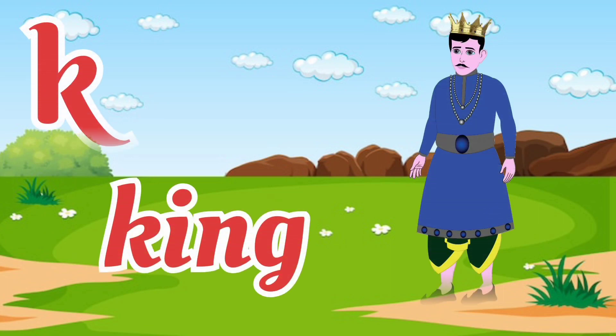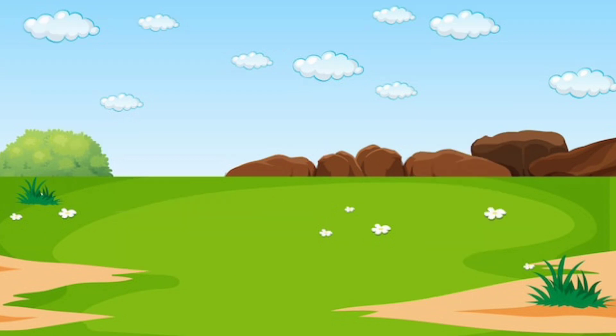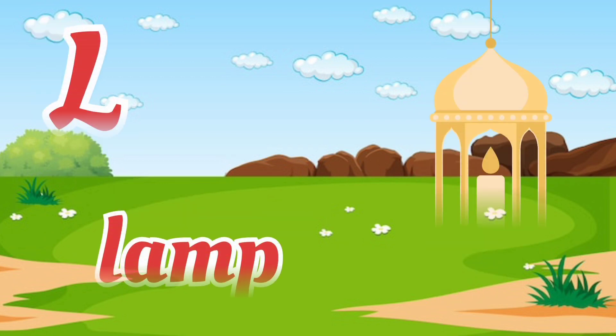K for king. King means raja. L for lamp. Lamp means lamp.